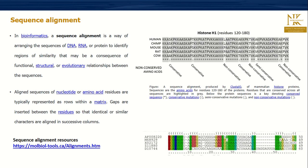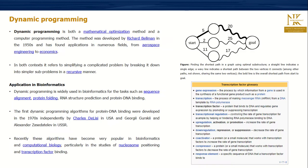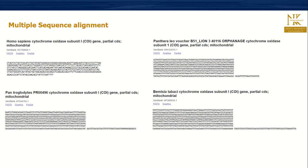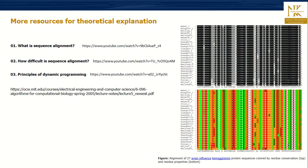The technology behind this is dynamic programming. Aligned sequences of nucleotides or amino acids are typically represented in rows within a matrix, with gaps inserted between residues so that identical or similar characters are aligned in successive columns. For more resources on global dynamic programming, you can visit the website provided, which we'll also use in hands-on sessions.